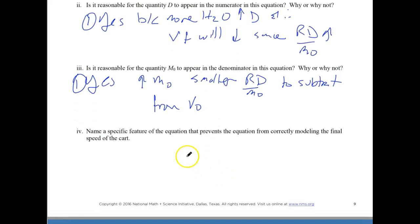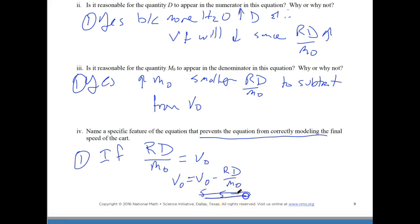Name the feature, specific feature, the equation that prevents the equation for correctly modeling the final speed of the cart. So remember, we have to conserve momentum. And if you ever get to a place where R times D over M0 is equal to V0, and you know that V0 minus RD over M0 is equal to the final velocity, if these two things are equal, if this is five and this is five, that's bad because our original velocity cannot be zero. And it can't be zero because we conserve momentum. So our original cannot equal zero because momentum is conserved. And you get one point for that, and that is the end of this huge 12-point problem. I'll see you next time.